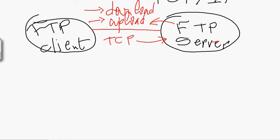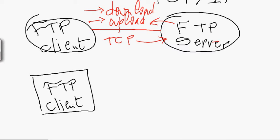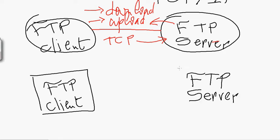FTP is an out-of-band protocol. To understand how this works: we have a computer where the FTP client process is running, and another computer where the FTP server is running. The two computers are connected through a network, such as a local area network. The FTP server is always listening on port 21.